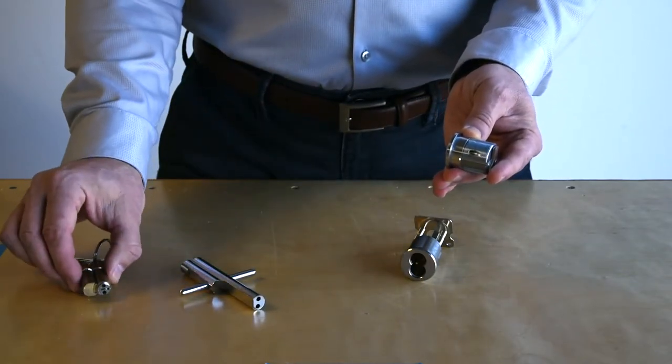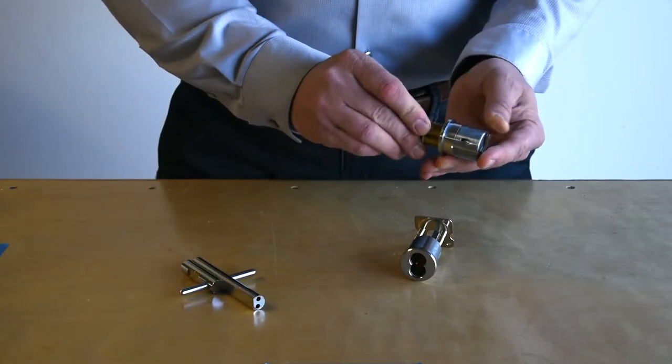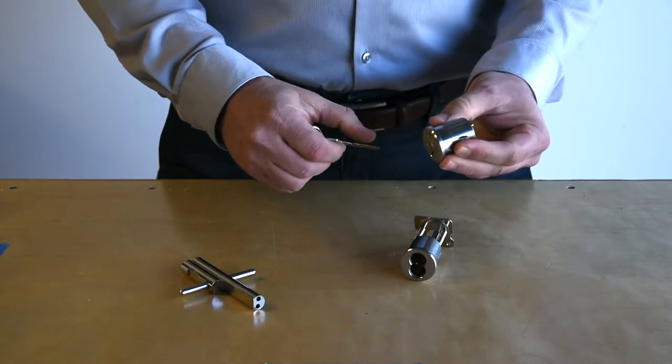When you're complete, you simply install the core and now your mortise cylinder is ready for function.